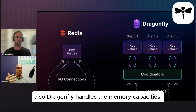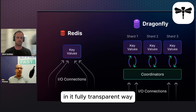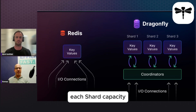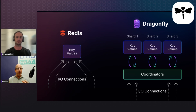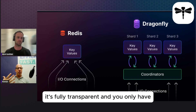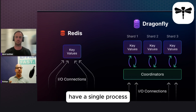Dragonfly handles memory capacity in a fully transparent way, so you don't need to manage each shard's capacity. In fact, you don't need to manage anything in those shards — it's fully transparent. And you only have a single process.